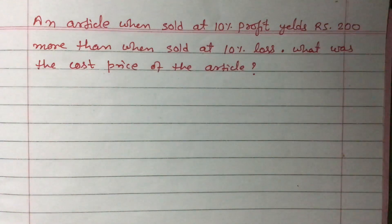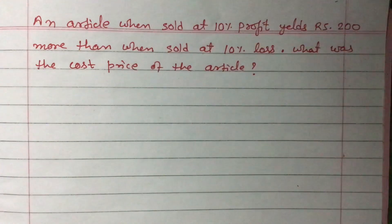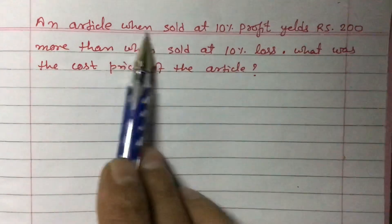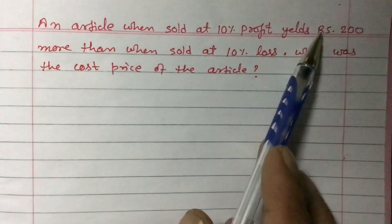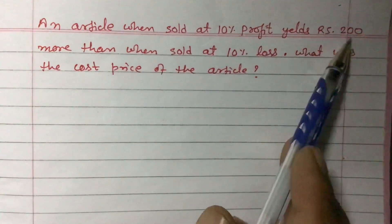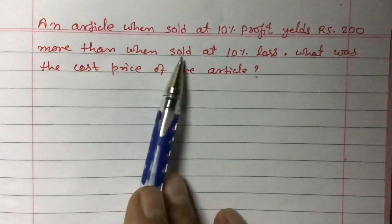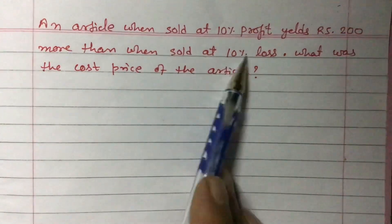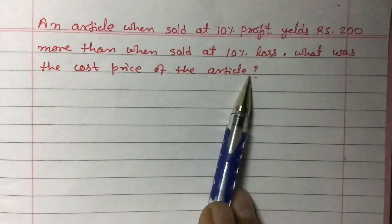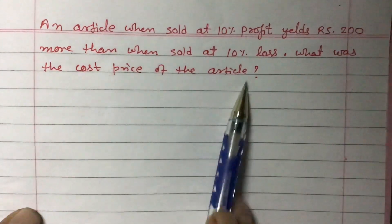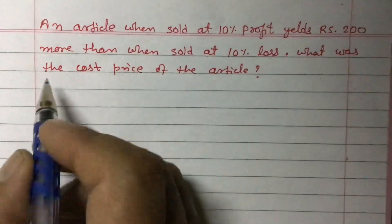Dear students, today I am going to teach you one question related to profit and loss of Class 9. The question is: an article when sold at 10% profit fetches rupees 200 more than when sold at 10% loss. What was the cost price of the article?